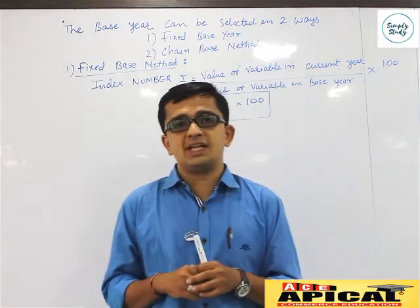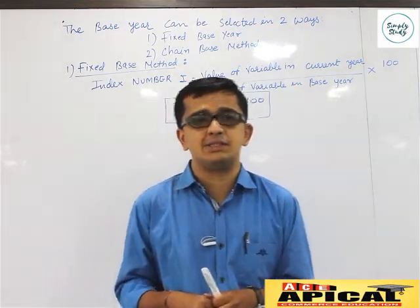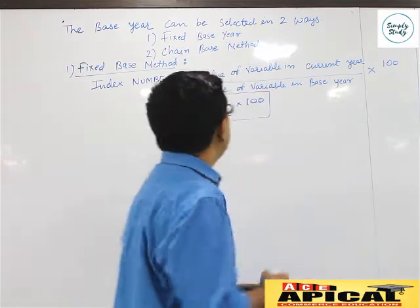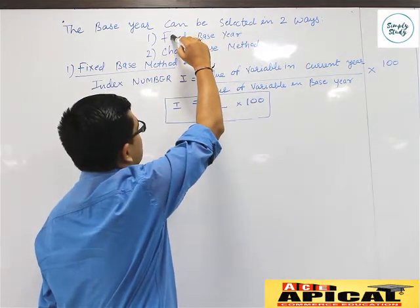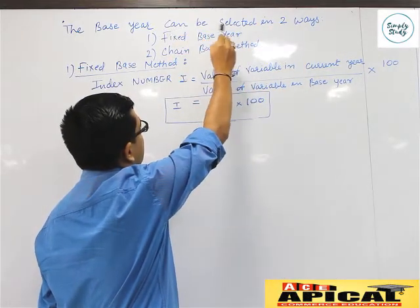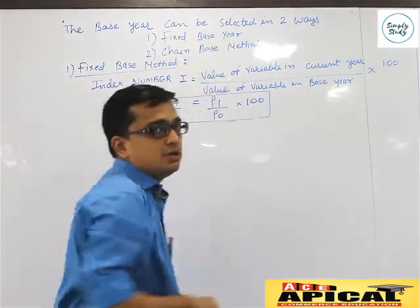So now the question arises: how do we select this base year? Basically there are two methods of selecting the base year. First, the fixed base method. Second, the chain base method.